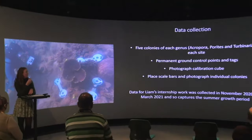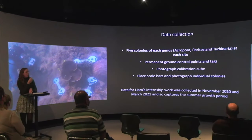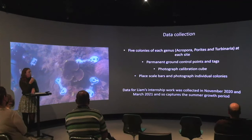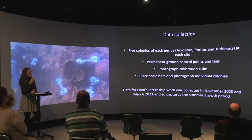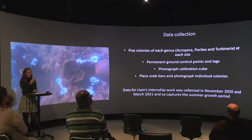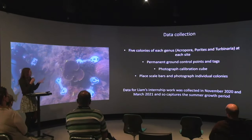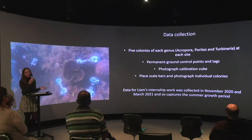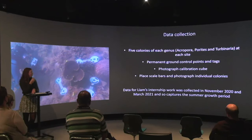Once we've set up the site, firstly we photograph the calibration cube using the Canon G7X standard camera in a series of arcs to ensure between 50 and 60 overlapping images. Once the cube's been photographed, we place scale bars around each coral colony and photograph those in a similar way. Depending on environmental conditions, we make sure to have as many photos as possible including the scale bars and permanent control points, taking more photos when turbidity is worse. The data for Liam's internship was collected in November 2020 and March 2021, capturing the summer growth period of about four months.